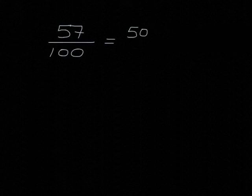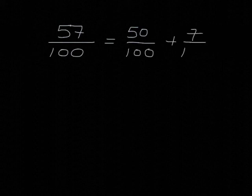Let's look at how we can convert a fraction like 57 over 100 into a decimal. Well, 57 over 100 is just equal to 50 plus 7 over 100, so it's 50 over 100 plus 7 over 100.